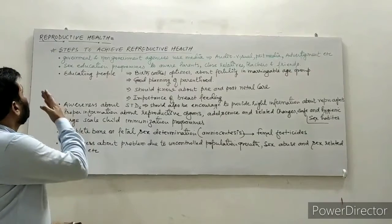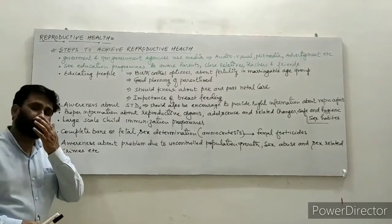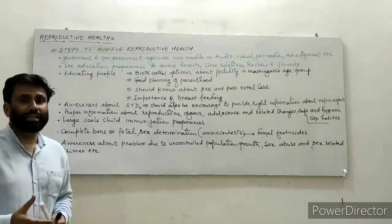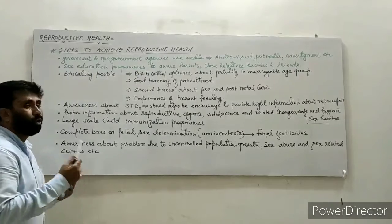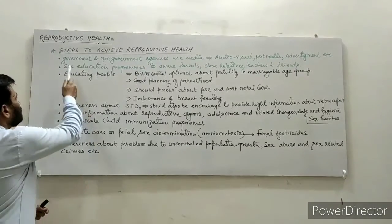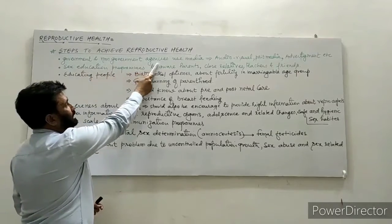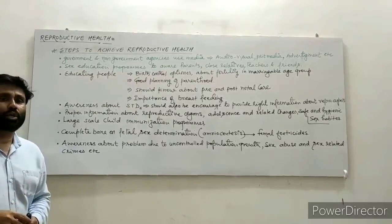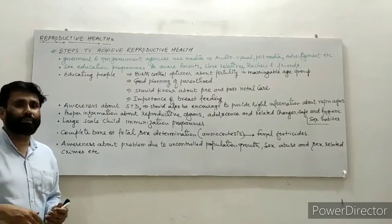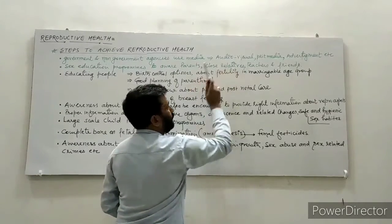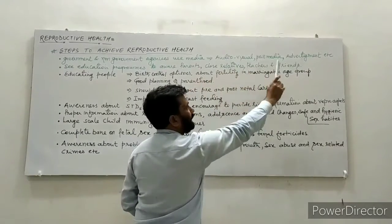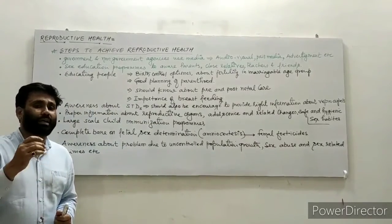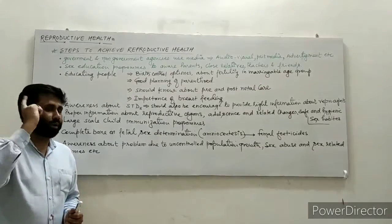Next — steps to achieve reproductive health. What steps should be taken to achieve reproductive health? India has decided these from its goals. First: government and non-government agencies should use media — audio-visual media or print media — to enhance awareness among people about reproductive aspects and to achieve reproductive health.